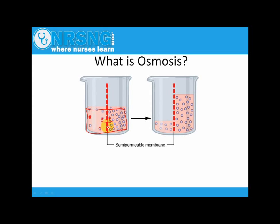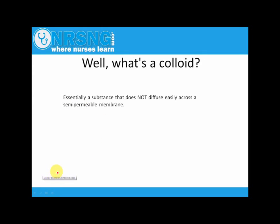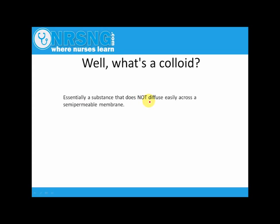So the liquid is going to pass through this membrane until homeostasis is reached — until the concentration of solute is equal on either side of that membrane. That's what osmosis is: the passage of liquid from an area of low concentration to an area of high concentration of solute to achieve equilibrium. Now, what is a colloid? Essentially, a colloid is a substance that does not diffuse easily across a semipermeable membrane.